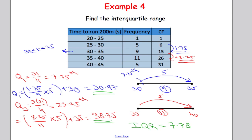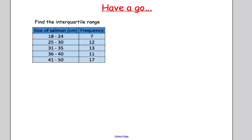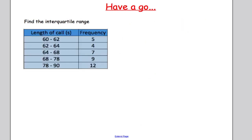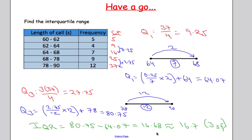Here are some examples for you to attempt. Pause the video and work out the interquartile range. Q1 worked out to be 27.25, Q3 was 38, so the IQR was 38 take away 27.25 = 10.75. For the second question, the interquartile range to three significant figures is 16.7. If you're not sure, pause the video and look at the calculations. Do refer to the previous examples if you're not getting it right.